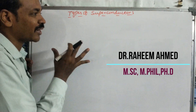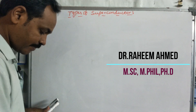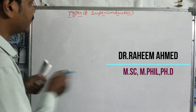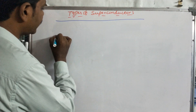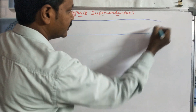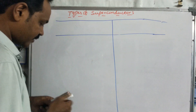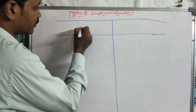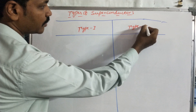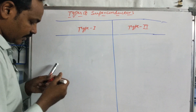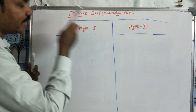Good morning. Today we are going to discuss types of superconductors. There are two types of superconductors: Type 1 superconductor and Type 2 superconductor. We will observe the difference between them in a graph.